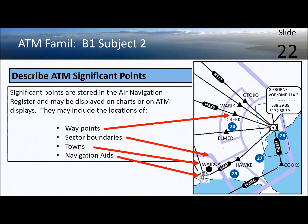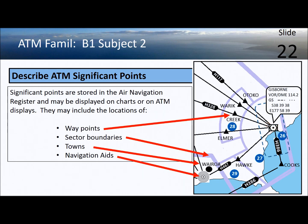Significant points are stored in the air navigation register and may be displayed on charts. Examples include waypoints, sector boundaries shown in light purple lines, towns, and navigation aids such as an NDB and a VOR DME. These significant points are also displayable on the ATM display, although controllers can choose to switch off certain features if it causes too much clutter.